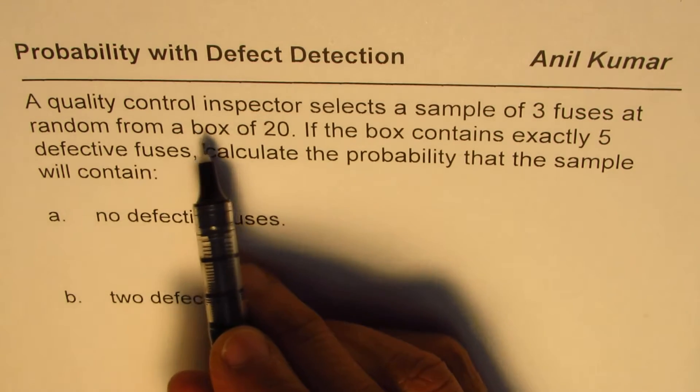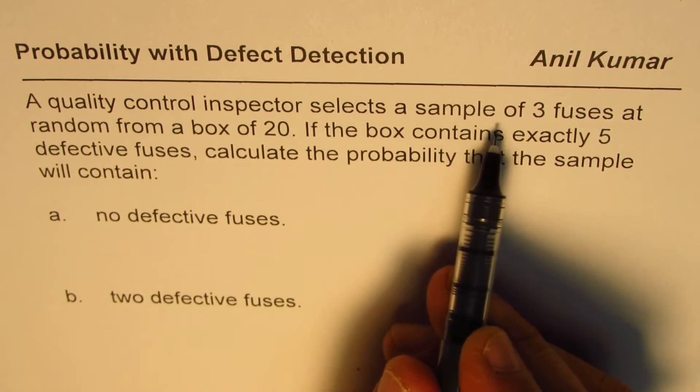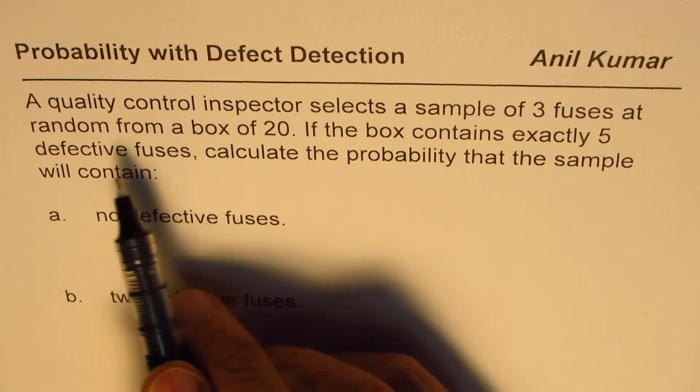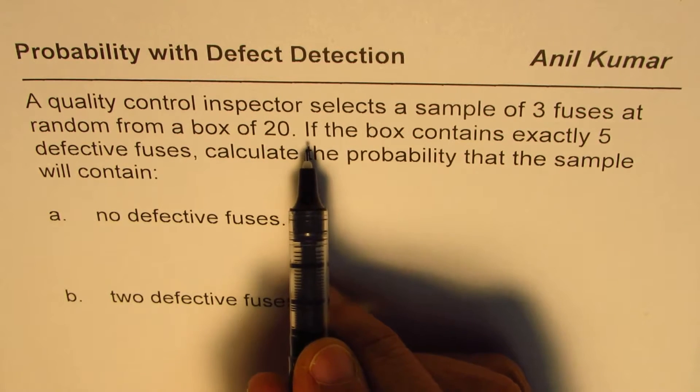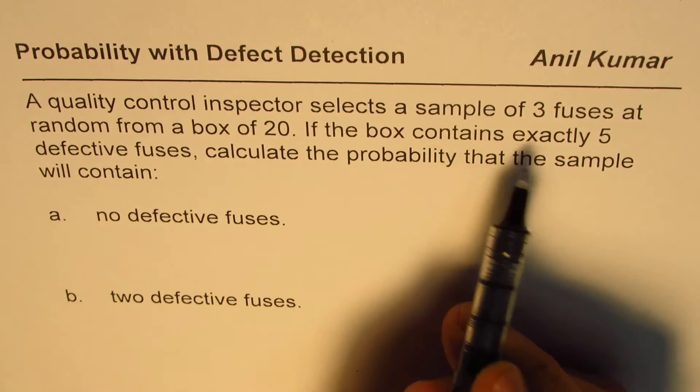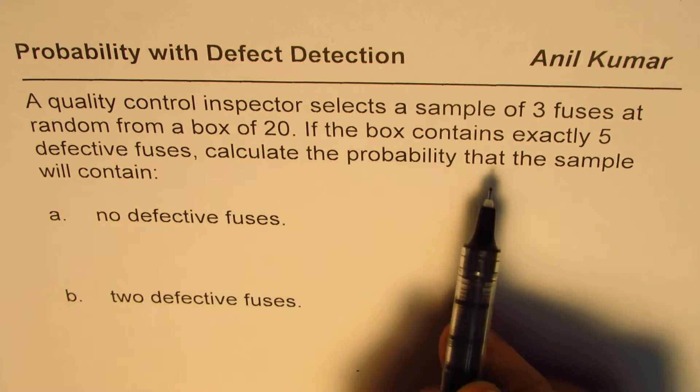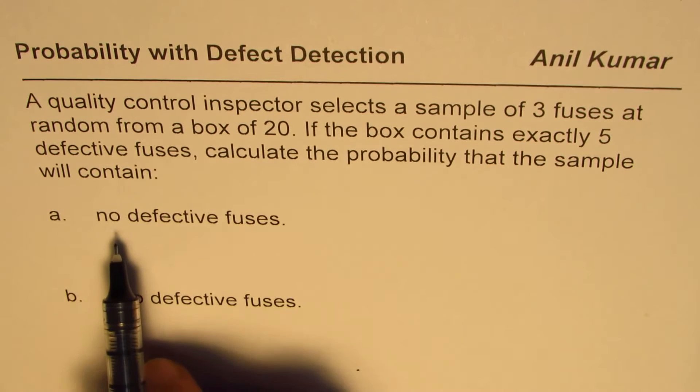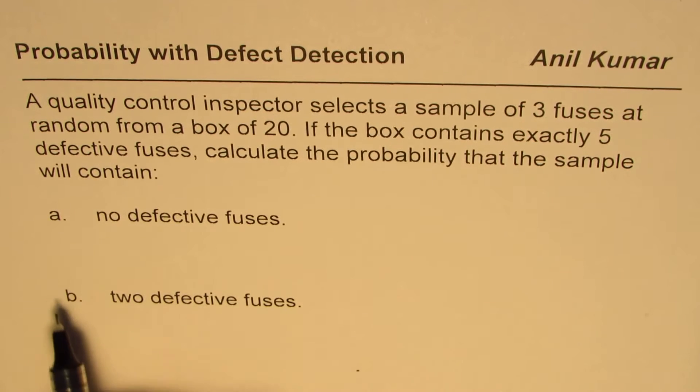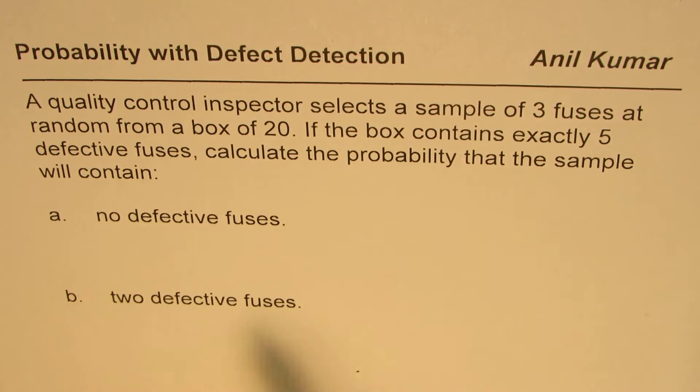The question here is: a quality control inspector selects a sample of three fuses at random from a box of 20. If the box contains exactly five defective fuses, calculate the probability that the sample will contain no defective fuses. And part B is that the sample will contain two defective fuses.